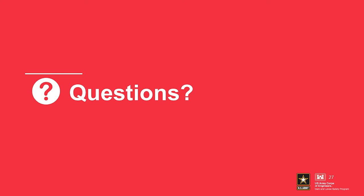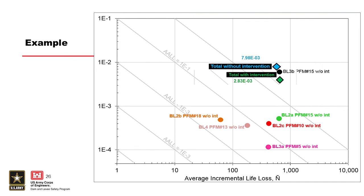Any questions on governance and guidelines? One question noted that the line labeled 1×10⁻³ in the gray area should be 1×10⁻² — good catch. Next, we'll be hearing from Bart Best, who will be talking about SQRA.